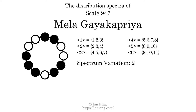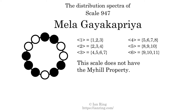The spectrum variation is the sum of all the widths, divided by the number of tones. The spectrum variation of this scale is 2. Since the variation is greater than 0, this indicates that the scale is not perfectly even. The highest spectrum width is 3. Since this is greater than 1, we know that this scale is not maximally even. If every spectrum has exactly two specific intervals, we call that the Myhill property. This scale does not have the Myhill property.